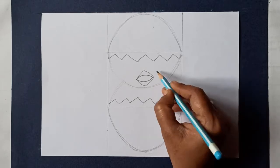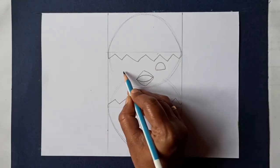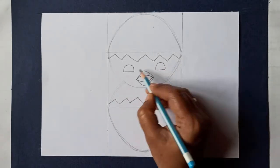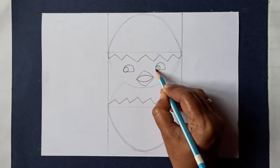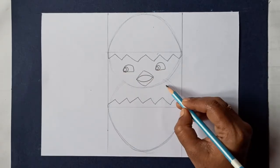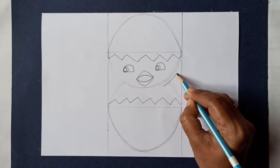Draw eyes, now pupil and highlight. Add wings as shown here.